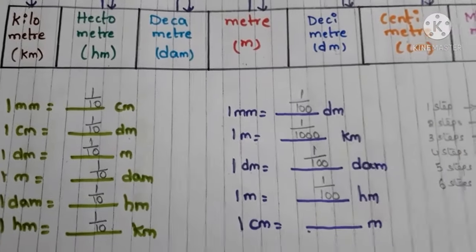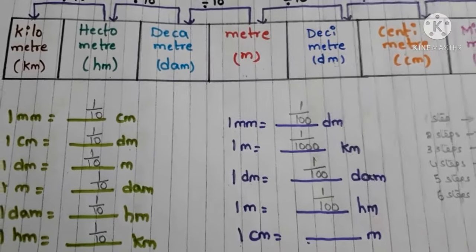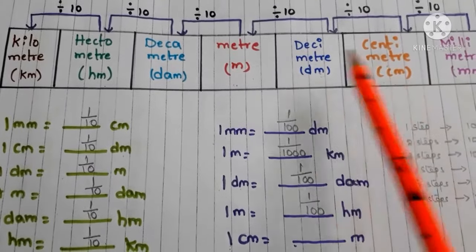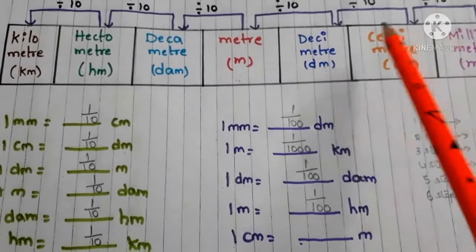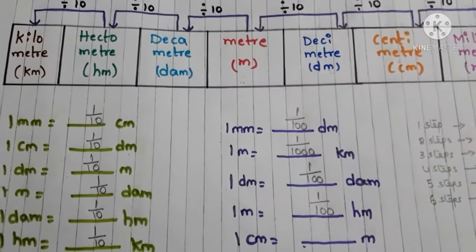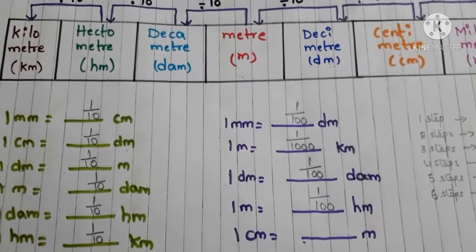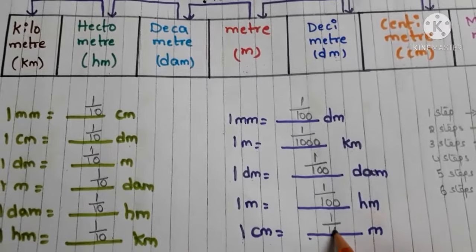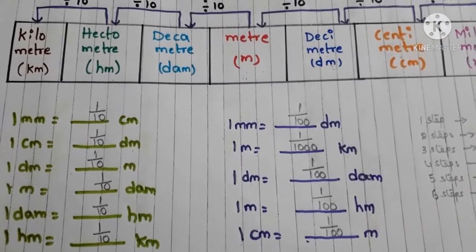Finally: 1 centimeter equals how many meters? Find centimeter in the table, then find meter. Count the steps: one, two — two steps. So we divide by 100. Therefore, 1 centimeter equals 1/100 meters.